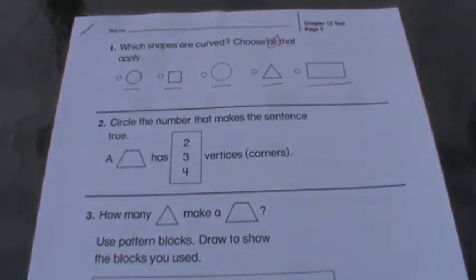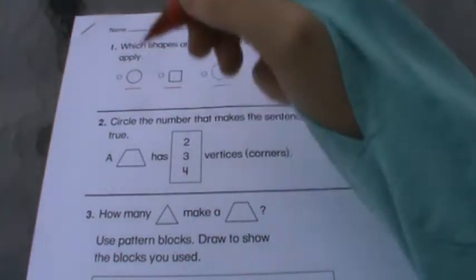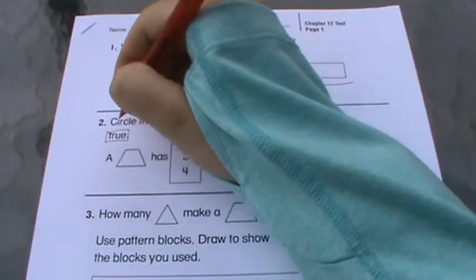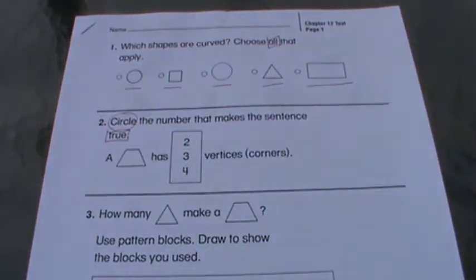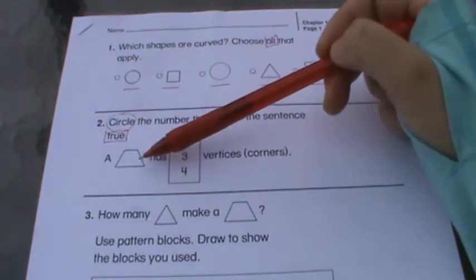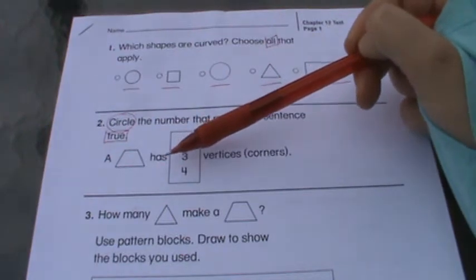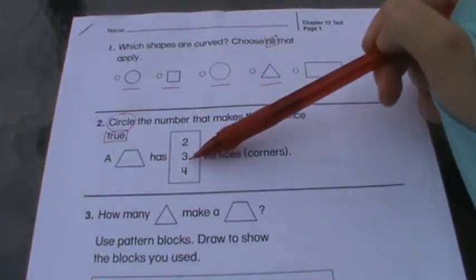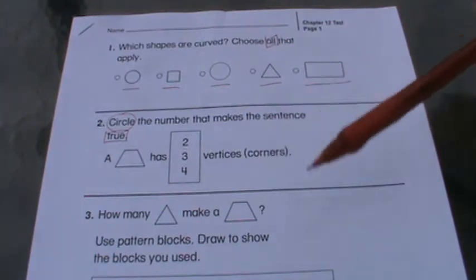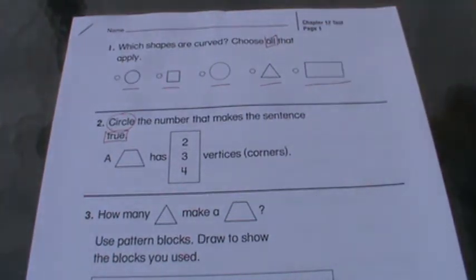So number two, circle the number that makes the sentence true. A trapezoid has two, three, or four vertices, which is the same thing as corners.